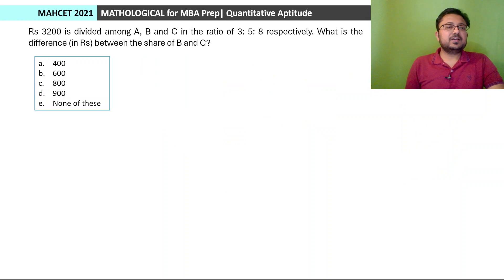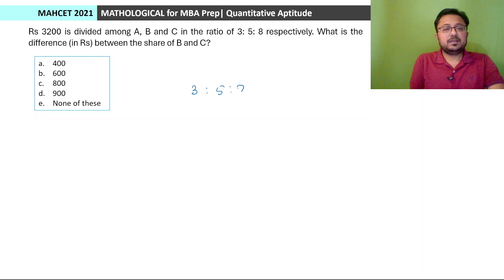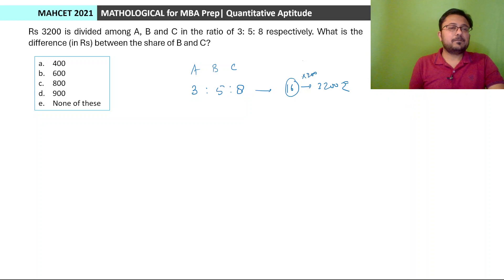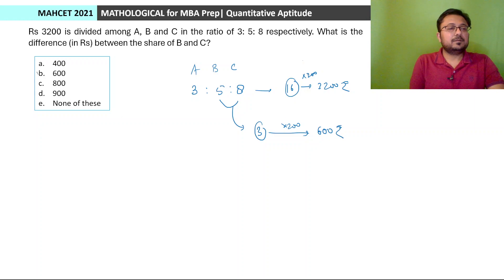Next: Rs. 3200 is divided among A, B, and C in the ratio 3:5:8. What is the difference between the share of B and C? Total units = 3+5+8 = 16 units = Rs. 3200, so 1 unit = Rs. 200. Difference between B and C is 8−5 = 3 units = 3×200 = Rs. 600. Option B.